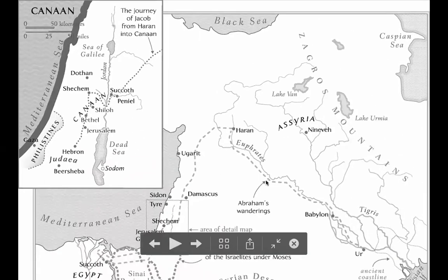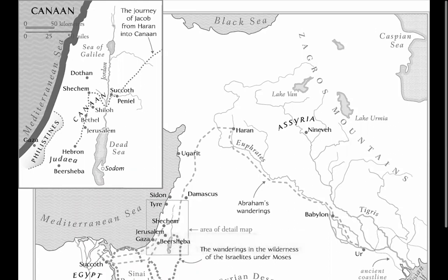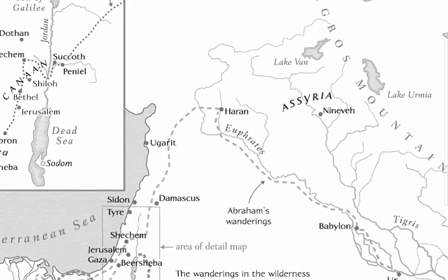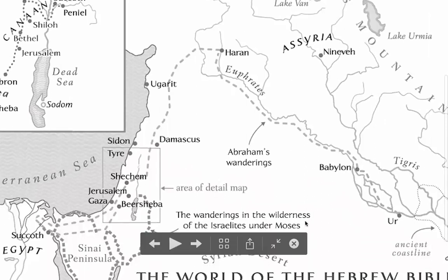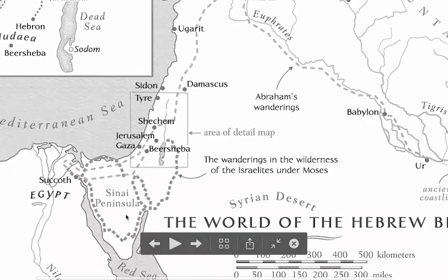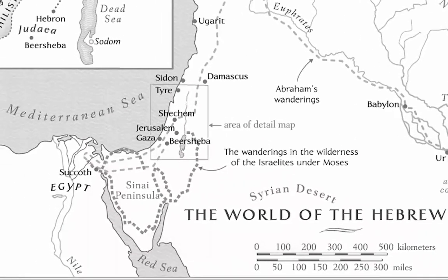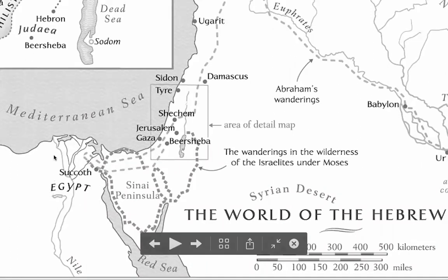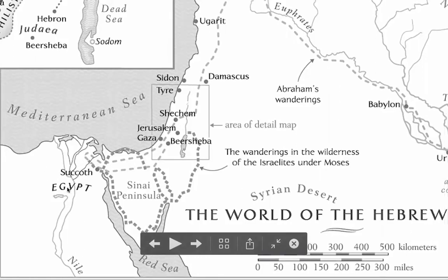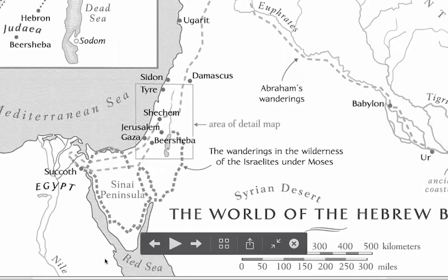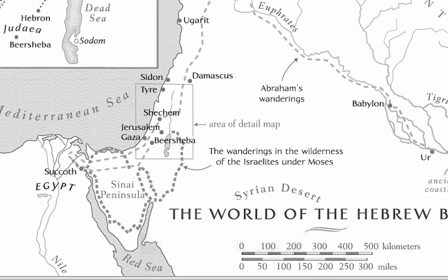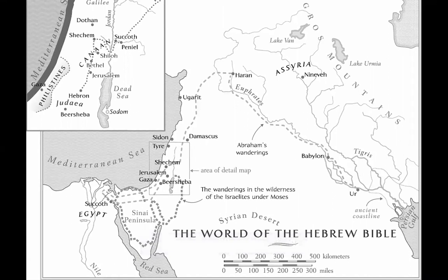The map also shows the wanderings of the Israelites under Moses. As the story goes, the Israelites are captured by Pharaoh in Egypt — present-day Cairo — and eventually escape through Moses and his brother's help. Moses parts the Red Sea, but they don't quite know where they are. According to the story, it takes them 40 years to get back, though Moses is ironically unable to make the final journey to the Holy Land.